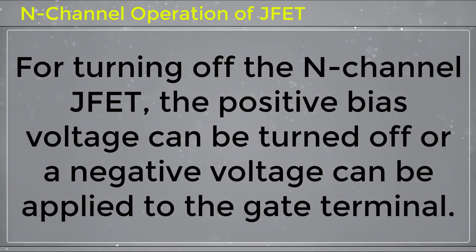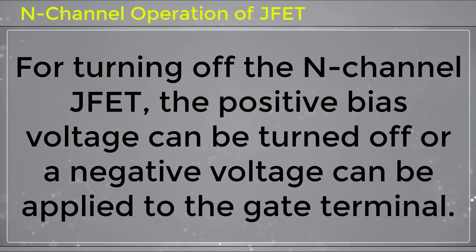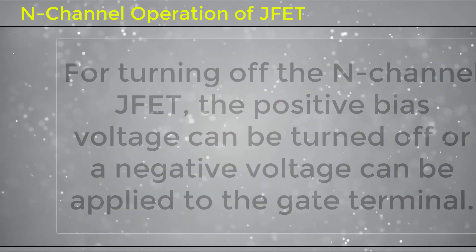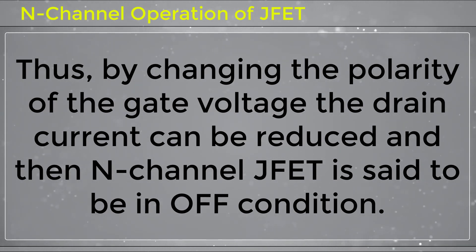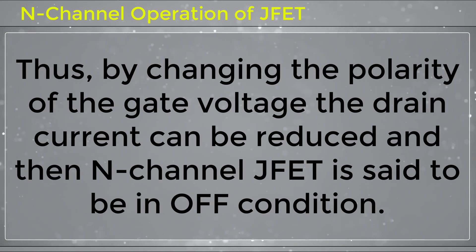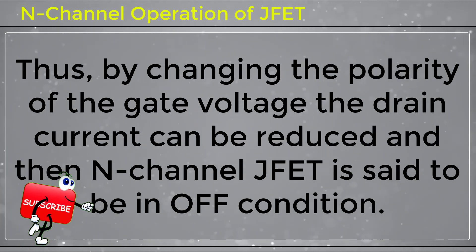For turning off the N-channel JFET, the positive bias voltage can be turned off, or a negative voltage can be applied to the gate terminal. By changing the polarity of the gate voltage, the drain current can be reduced, and the N-channel JFET is said to be in the OFF condition.